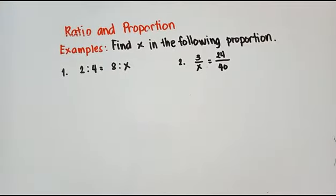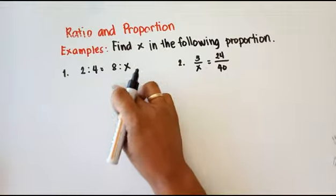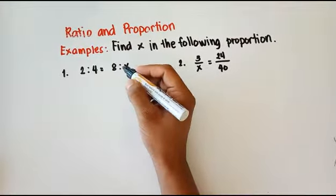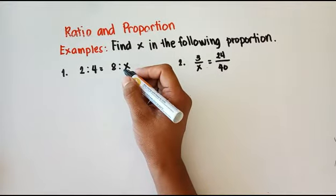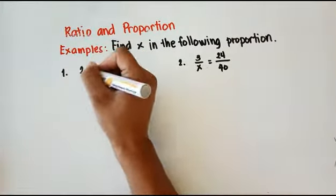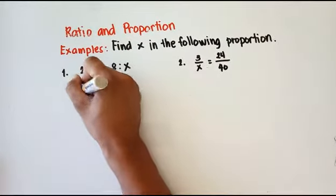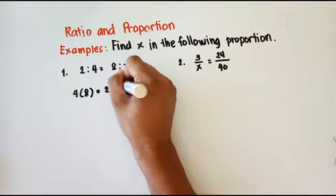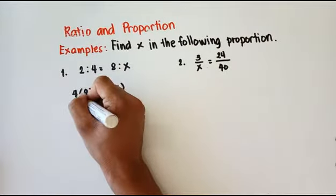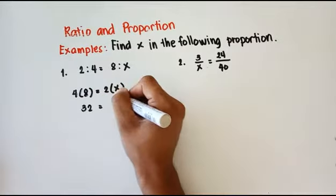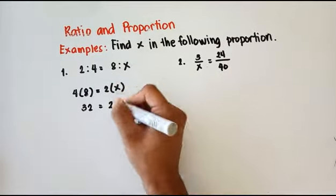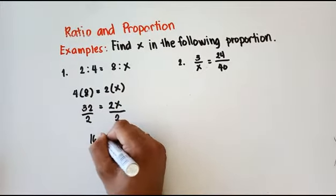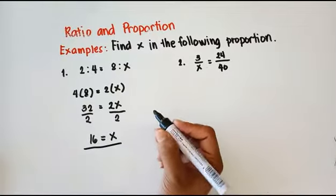Example: find x in the following proportion. We have 2 is to 4 is equal to 8 is to x. We get the product of our means and extremes: 4 times 8 equals 2 times x. So 32 equals 2x. Divide both sides by 2 — x equals 16. Therefore, x is equal to 16.